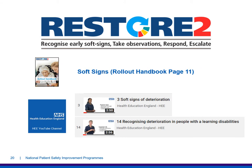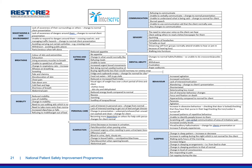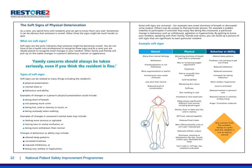Let's start with soft signs — reference page 11 in the handbook and videos numbers 3 and 14. There are a lot of soft signs; one healthcare organisation managed to list over 120 different soft signs. As a carer, you spend time with residents and can get to know them very well. Sometimes it can be obvious that someone is unwell; other times the signs might be much harder to spot. Soft signs are the early indicators that someone might be coming unwell. You don't have to be a healthcare professional to recognise these signs. Often family and friends will pick up on subtle changes in a person's behaviour, manner or appearance.